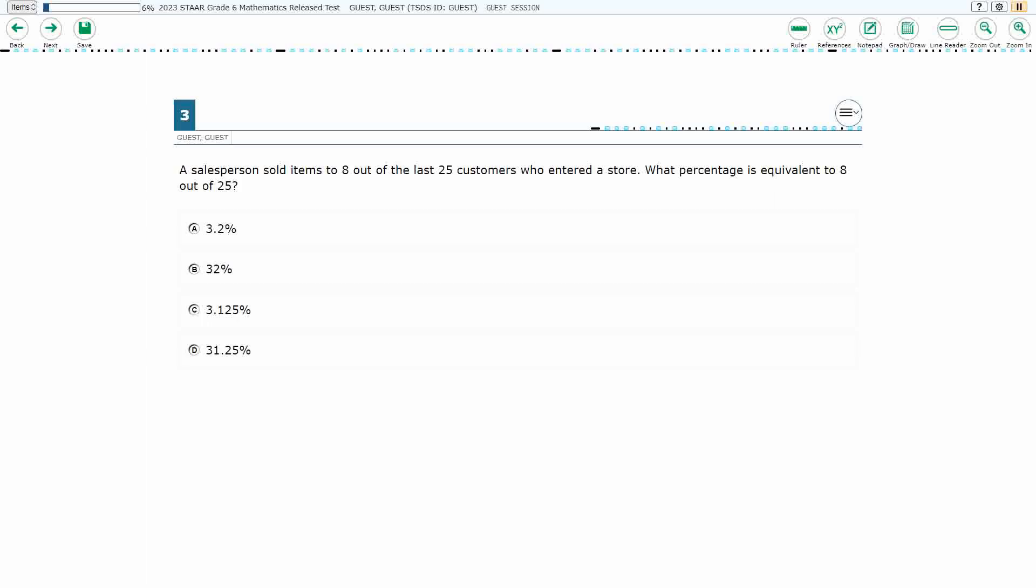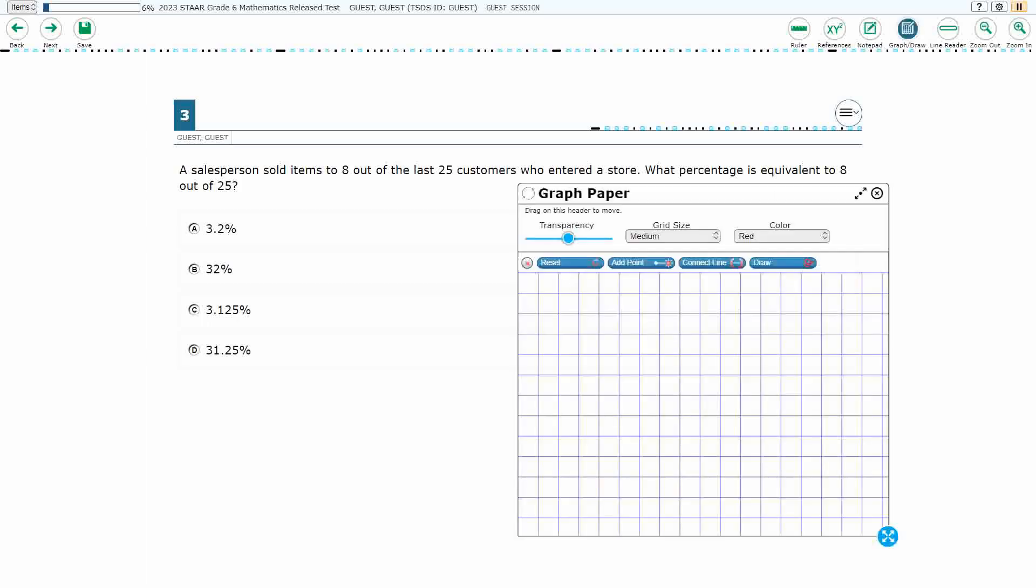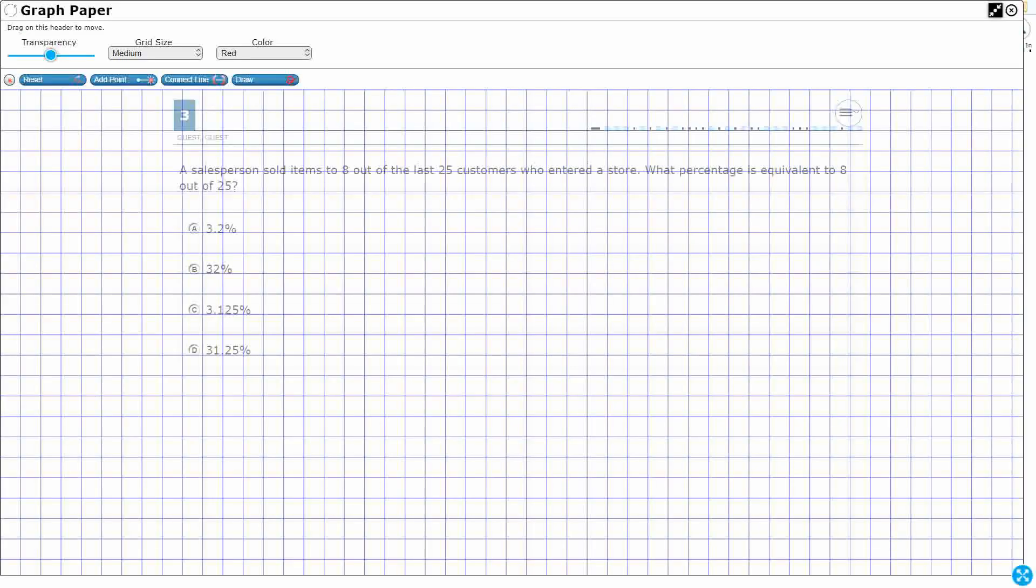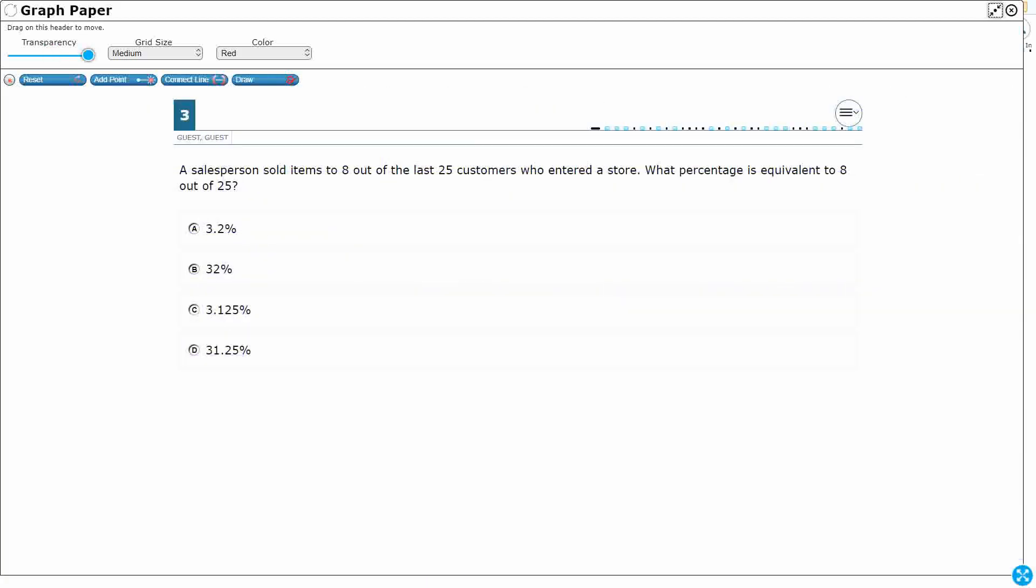We have a salesperson selling 8 items to the last 25 customers. We need to turn that into a percentage, this 8 out of 25. First off we need to see that this can be viewed as a fraction. 8 out of 25 can be viewed like this. Our 8, that's going to be our parts, and then the 25 is going to be the number of parts, our numerator and denominator.